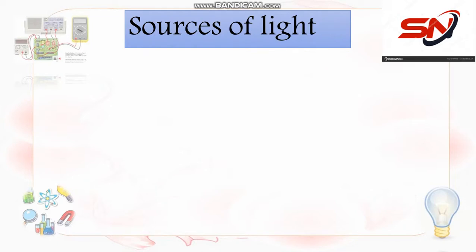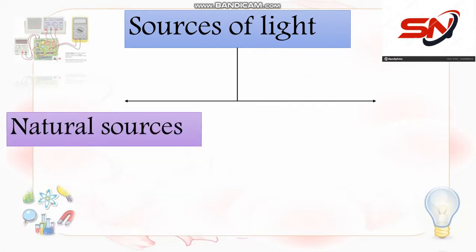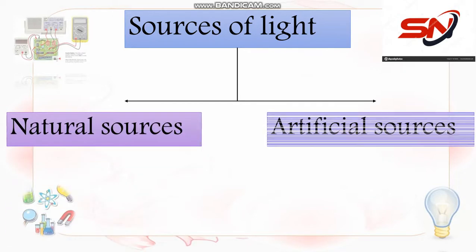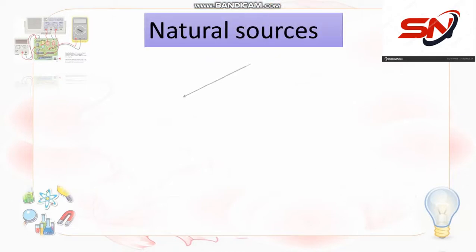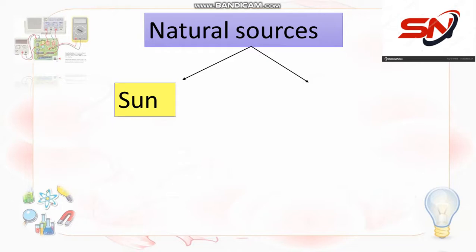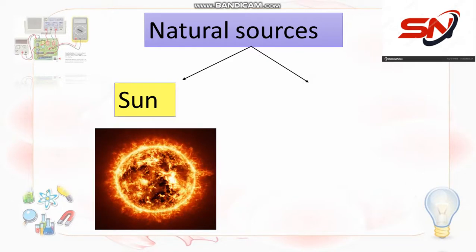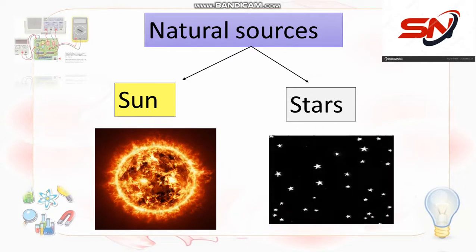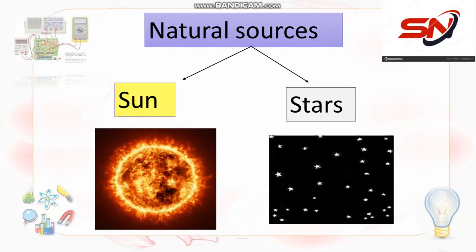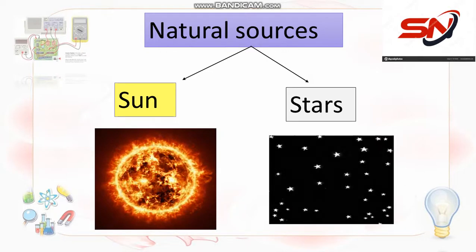Sources of light — مين اللي بيطلع علينا light؟ فيه حاجات كثيرة قوي بتطلع علينا light، فاحنا classified them into two sources: natural sources يعني مصادر طبيعية، and artificial sources مصادر مش طبيعية — made by man. Natural sources like the sun and the stars. Sun and stars are natural sources — ربنا هو اللي خلقهم.